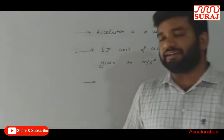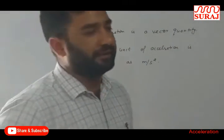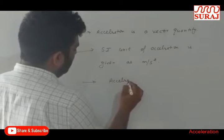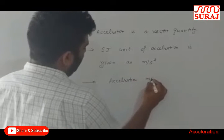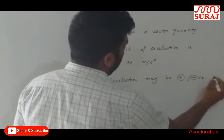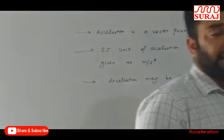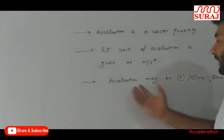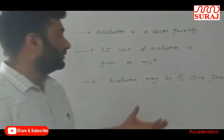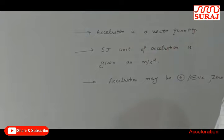Acceleration is defined as change in velocity. In our last lecture we studied that velocity may be positive, negative, or zero. So acceleration may also be positive, negative, or zero, because it is the ratio of velocity with respect to time. If velocity is negative then acceleration is negative; if velocity is positive then acceleration is positive; and if velocity is zero then acceleration will be zero.